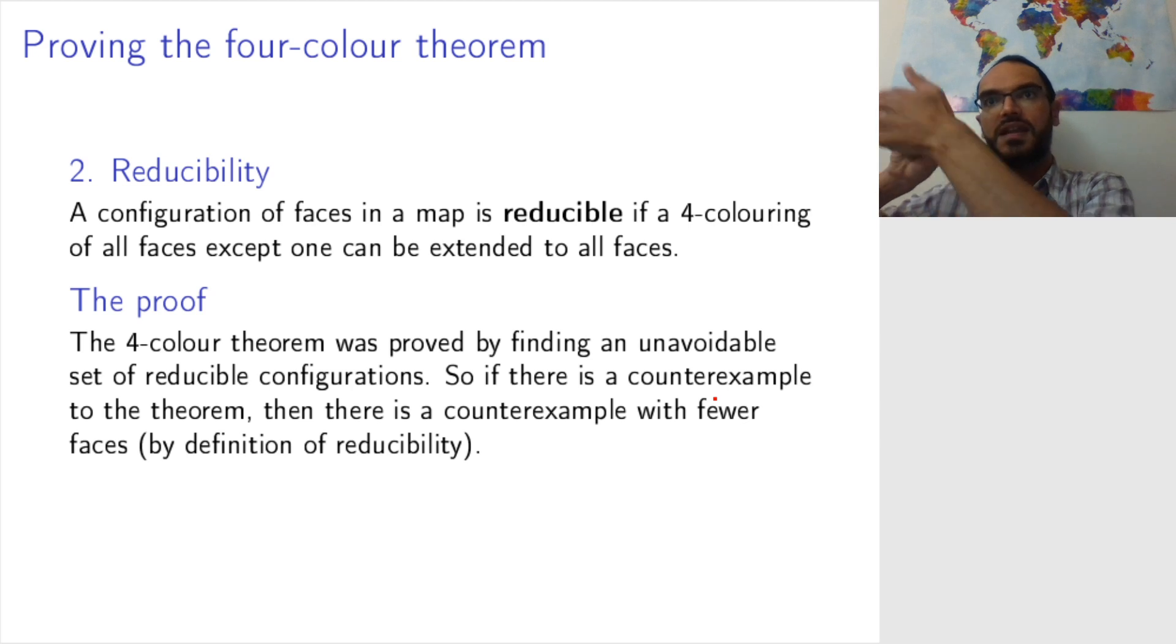So this means that if you remove one face, the remaining map will still be not four colorable because reducible face means that if upon removal of a face I can four color the map, then I can four color the original thing. So if the original thing is not four colored, then removing a face will result in something that is not four colorable.